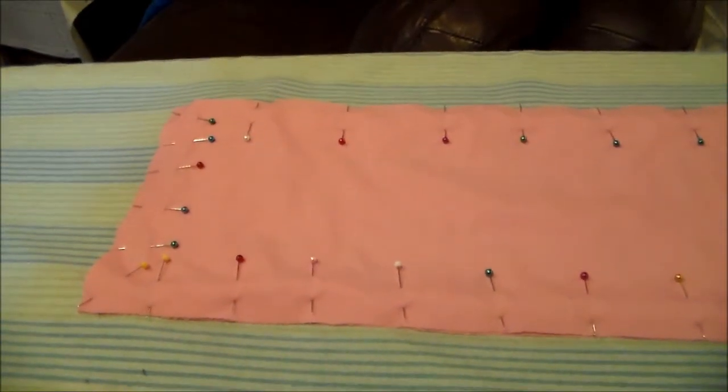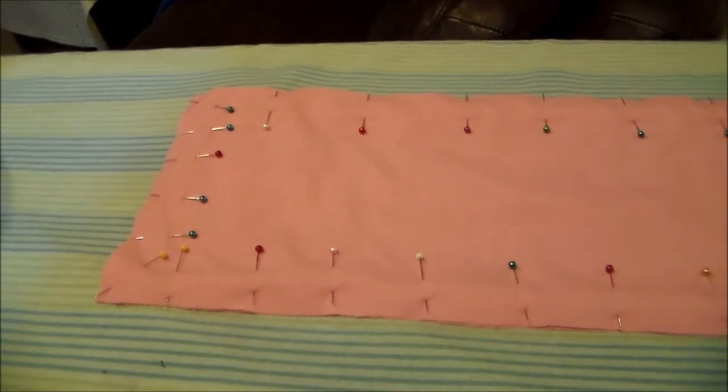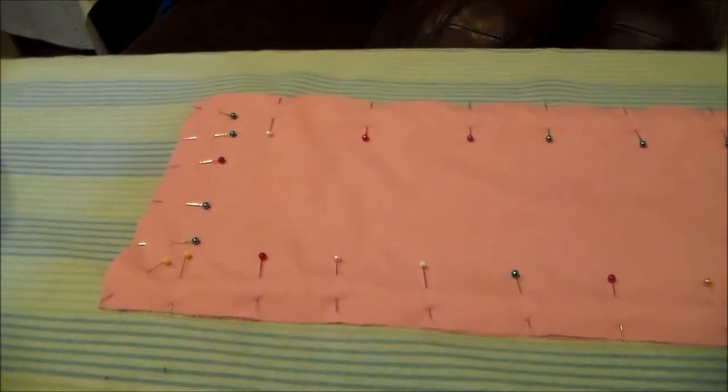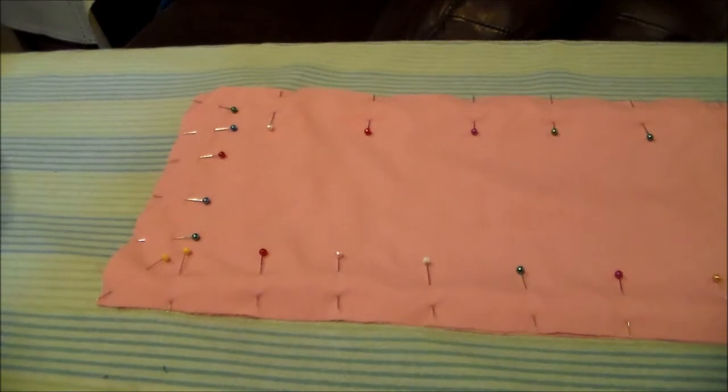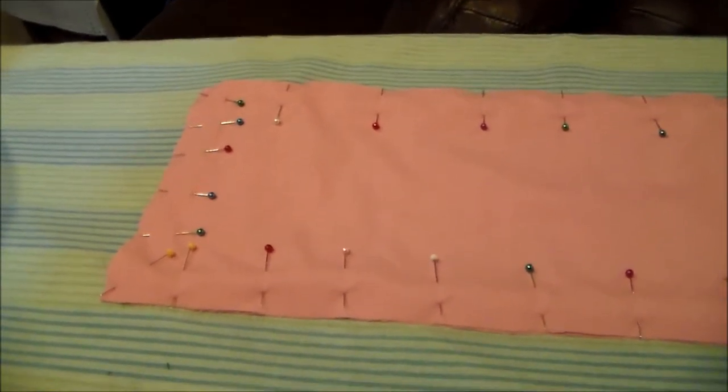Now it's time to make Morrigan's obi. I'm going to be using a different method than the pattern that I used for the yukata, but I'm still going to be using the pattern pieces that came with it.